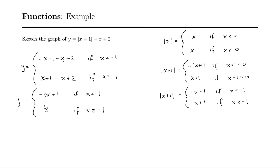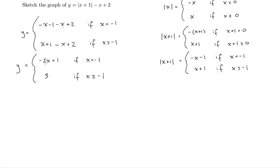So now we've written our function without absolute values. These two portions are pretty easy things to graph. One of them is an equation of a line and the other one is just a constant function. So now let's go ahead and sketch what we've got. We'll do our axes.